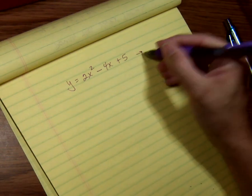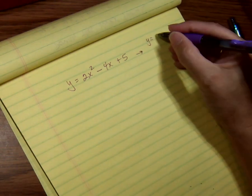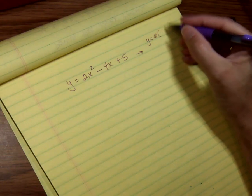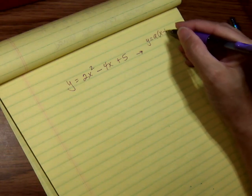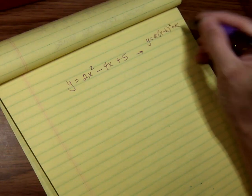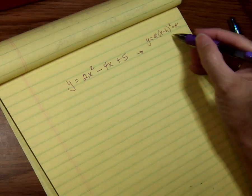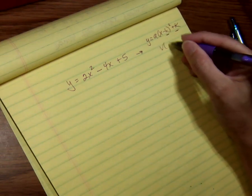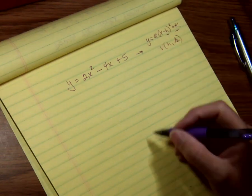So remember my goal is to get it in this form, y equals a times x minus h squared plus k. If I can get it in that form, then hk is my vertex.